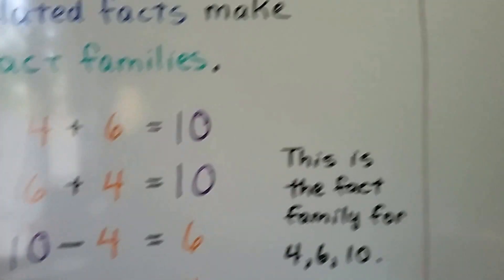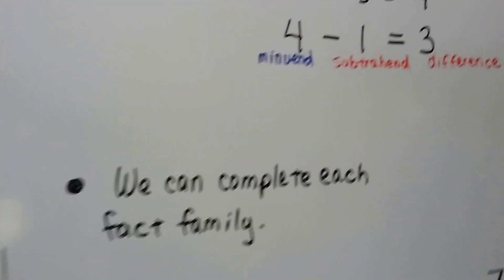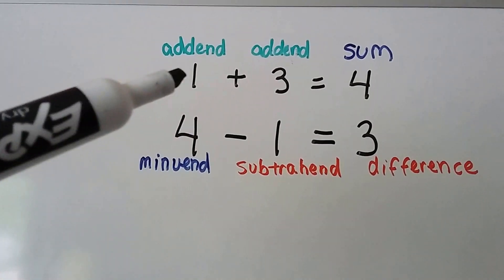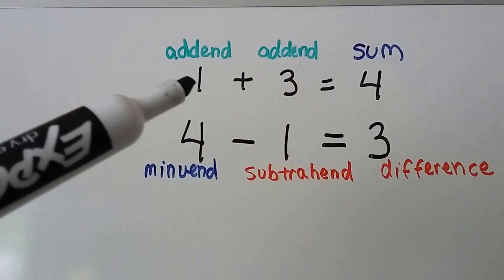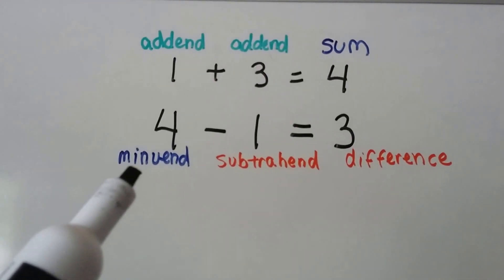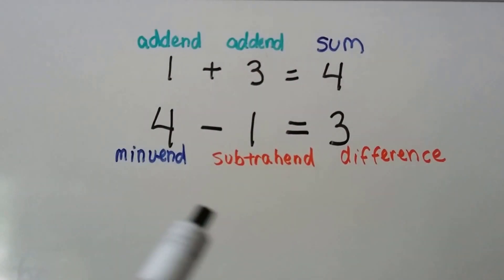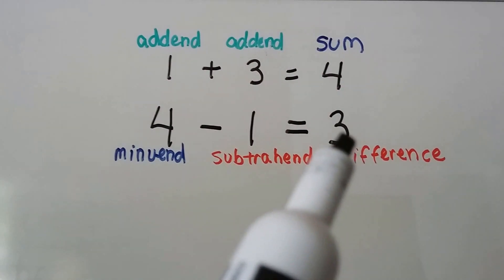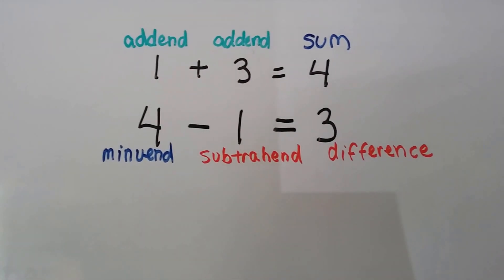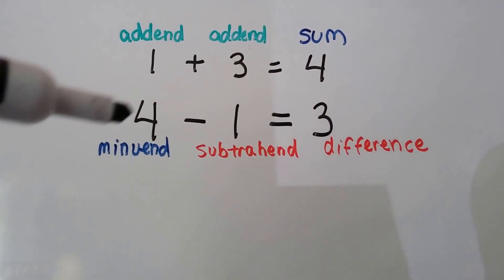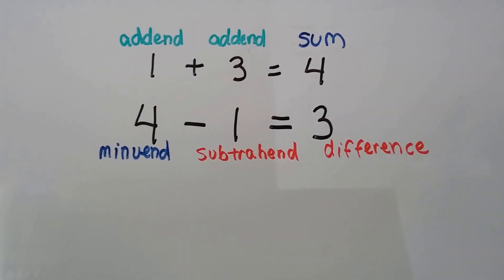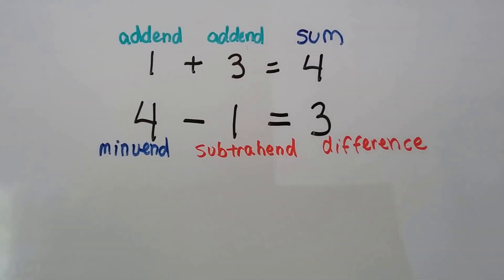So if you remember, the 1 and the 3 in this addition sentence are the addends, and the answer is the sum. And in this subtraction sentence, that's the minuend, that's the subtrahend, and the 3 is the difference — it's the answer. In fact families, the sum is the minuend. The sum of the addition sentence is the minuend of the subtraction sentence.